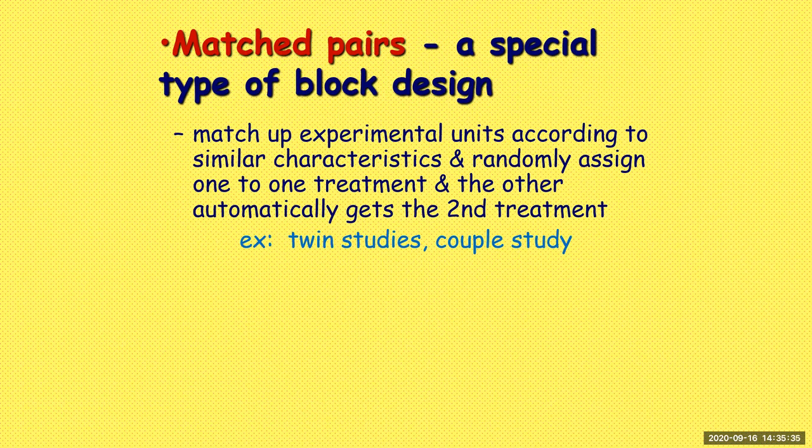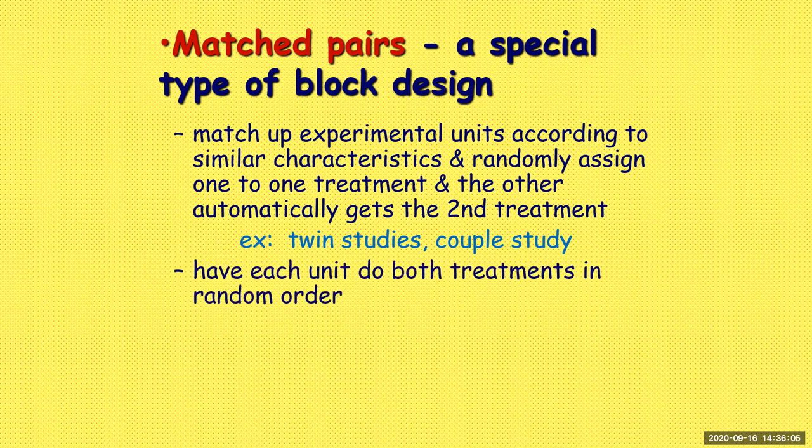It could be a taste test — an example of matched pairs where one person tries two different things, so you have the bias of that one person affecting both tastings. Or you could have a before-and-after design: one person's results before treatment is exposed and then the after results. Whatever variables are affecting that person are tied to both responses. One way to do it is have each unit do both treatments in random order.